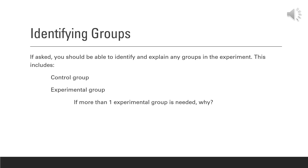You should also be able to identify groups, whether asked in a specific component of the question or included in the methods section. You should be able to identify the control group — what it is and why you have one — as well as the experimental group. In some experiments, it may require you to have more than one experimental group. If so, identify why and identify them specifically.